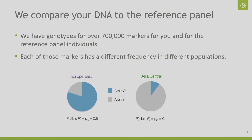Now that we have DNA from those reference panel individuals, we can compare your DNA to that reference panel. When you submit your saliva sample, we look at over 700,000 markers for you that we've also tested on our reference panel. An important thing to know is that each marker has a different frequency in different populations. While every population might have differences in that marker, those differences are going to be at a different frequency — they might be more common in some populations than others.